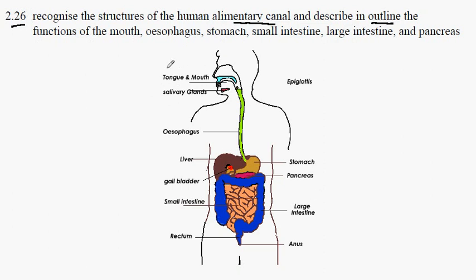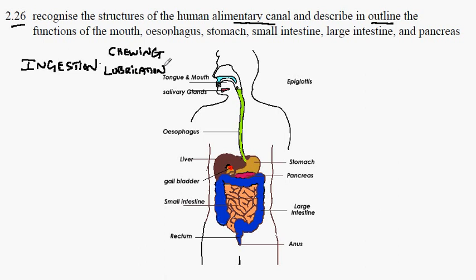We begin up here where food is introduced to the digestive system at the mouth and the tongue. This is a process known as ingestion — putting food into the digestive system. Teeth help to break food down so that it can be swallowed, so we could call that chewing. We also have the addition of mucus for lubrication, which allows food to slide down through the digestive system, and the addition of salivary amylase, an enzyme that digests carbohydrates. This is all part of the ingestion process.